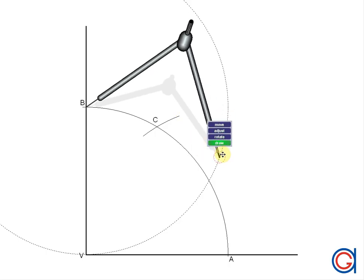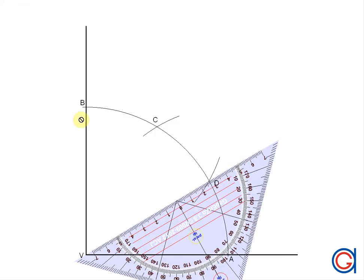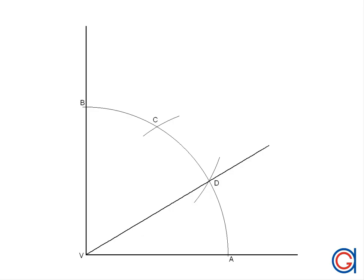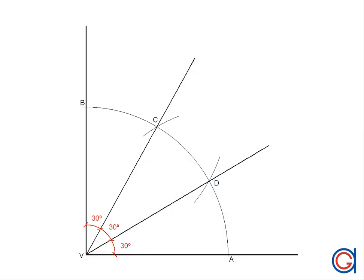Which we will call D. And finally, we join V to D and prolongate it, and also V to point C and prolongate it as well. And now here we have divided our 90-degree angle into three equal angles of 30 degrees each, which we mark here.